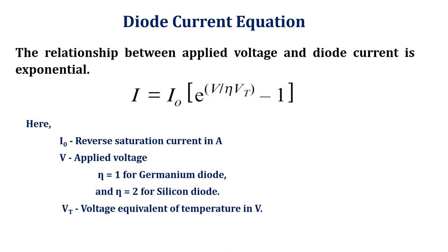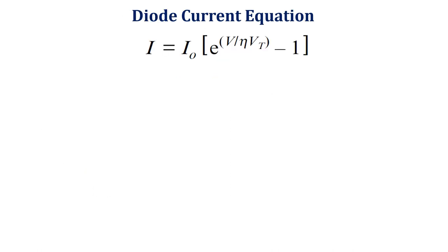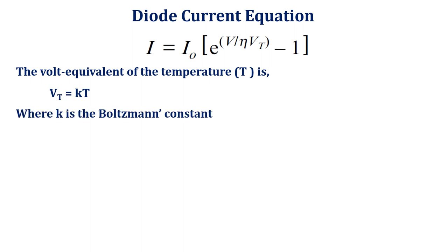Vt is the voltage equivalent of temperature in volts. The voltage equivalent of temperature indicates dependence of diode current on temperature. Vt is calculated as Vt equals KT volts, where K is the Boltzmann constant and is equal to 8.62 into 10 to the power of minus 5 electron volt per degree Kelvin.